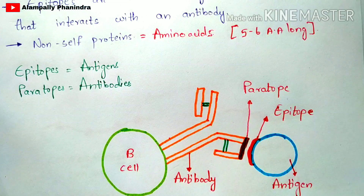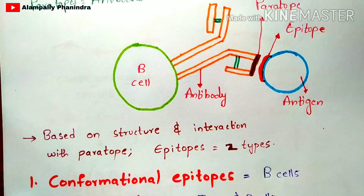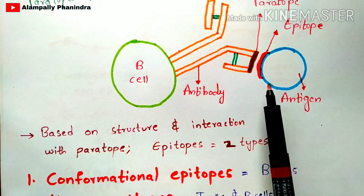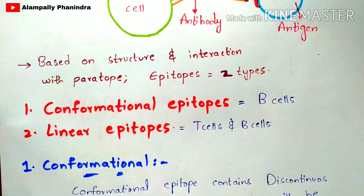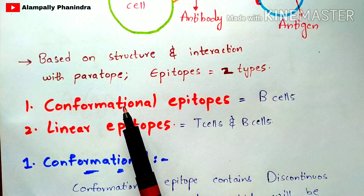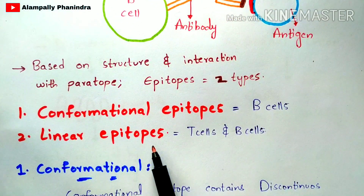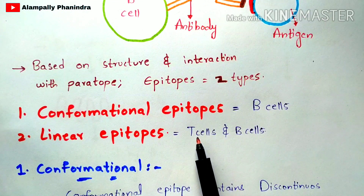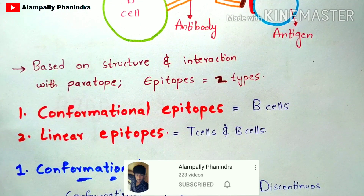Now let us discuss the types of epitopes. Based on structure and interaction with the paratope, epitopes can be classified into two types: conformational epitopes and linear epitopes. Conformational epitopes can bind to B cells, while linear epitopes can bind to both T cells and B cells. Conformational epitopes cannot recognize T cells — they recognize only B cells — but linear epitopes can recognize both T cells and B cells.